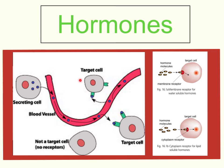A hormone will only have an effect on a specific cell known as a target cell. What makes a target cell a target cell is the presence of membrane receptors, which are proteins. A membrane receptor works by having a complementary shape to the hormone molecule — the receptor recognizes the hormone and produces a specific effect. A cell without those membrane receptors cannot detect the hormone message, so the hormone bypasses it and moves on to cells that do have receptors and are, in fact, target cells.